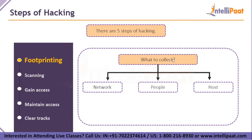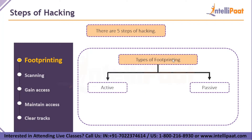We need network information like domain names, network blocks, IP addresses, TCP and UDP services running, etc. For people, we need information like employee details, organization website, location details, or personal addresses. And finally, we need host or computer/network details, including user or group names, routing tables, remote system names, etc. There are two types of footprinting: active and passive. Active means directly interacting with the target to gather information — for example, using the nmap tool to scan the target. Passive involves trying to collect information about the target without directly accessing it, such as collecting information from social media, public websites, etc.